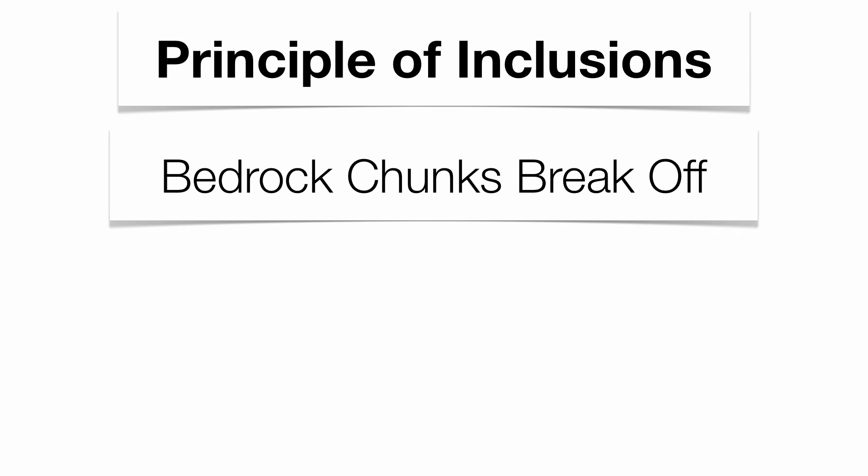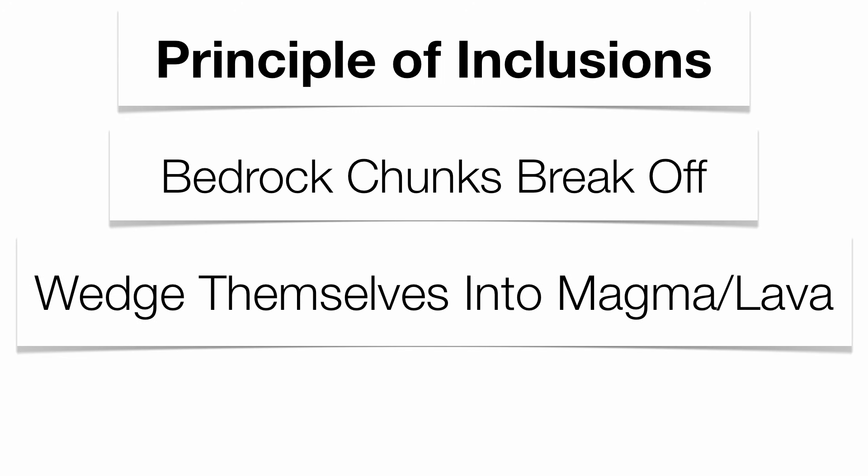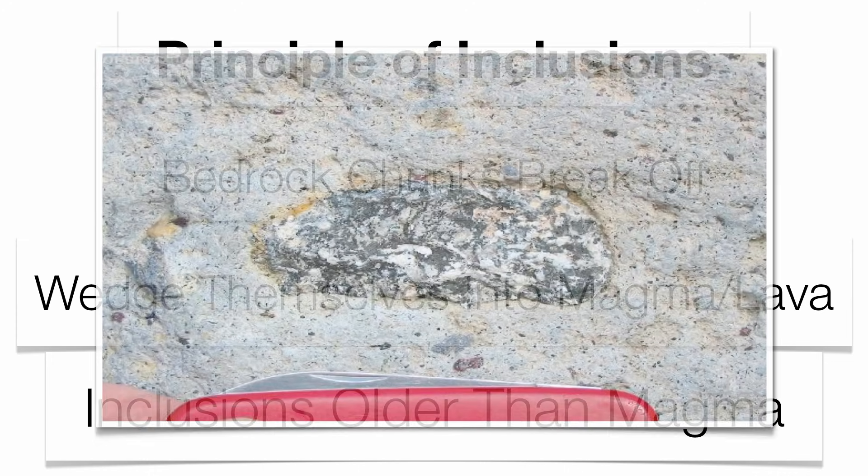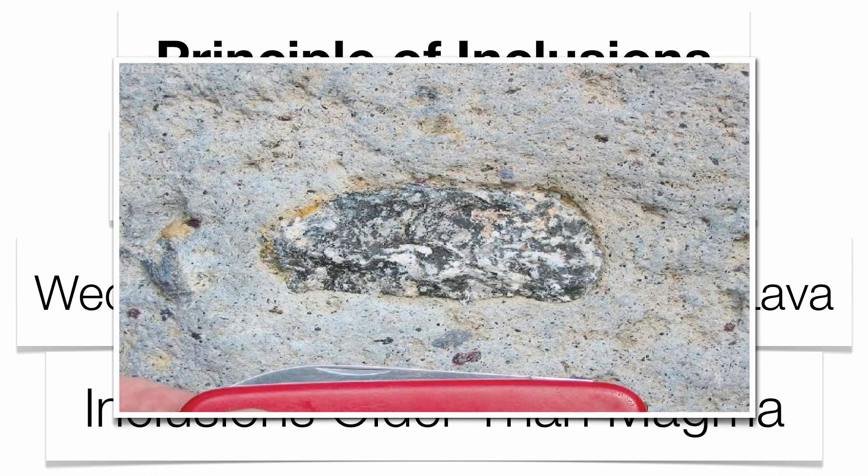You also have the principle of inclusions. Sometimes bedrock breaks off and falls into the magma or lava, and if the magma or lava isn't hot enough to melt it, that wedge works its way in. The inclusion is always older than the magma or lava — that rock had to have been there first before the magma or lava touched it.